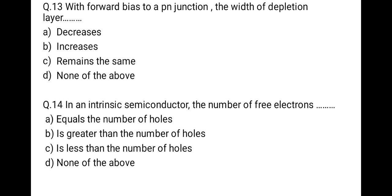The next question: with forward bias applied to a PN junction, what happens to the width of the depletion layer? The correct option is it decreases. In an intrinsic semiconductor, the number of free electrons equals the number of holes, due to the mass action law — n equals p.